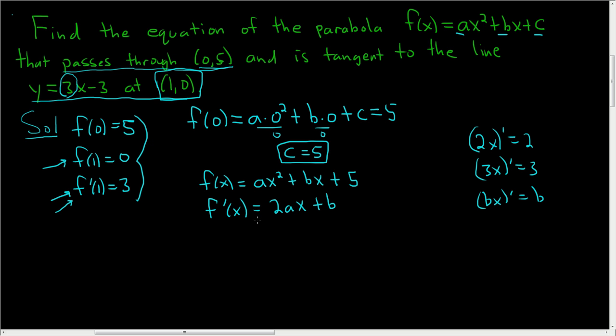Let's use the second condition, f(1) = 0. Plugging in 1, we get a + b + 5 = 0, which means a + b = -5. We'll need this.